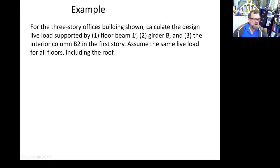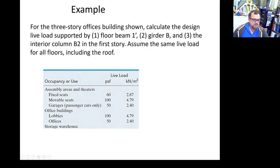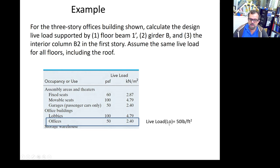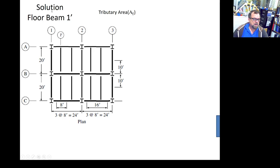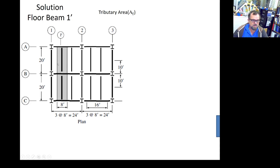First, the occupancy is office buildings: 50 pounds per square foot. That's our original live load, L₀. For floor beam 1', we calculate the tributary area. The spacing is 8 feet and the span is 20 feet. The tributary area is 20 times 8 equals 160 square feet.